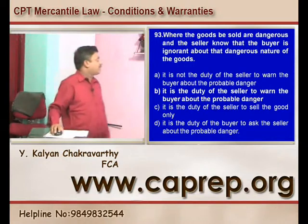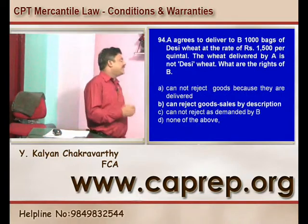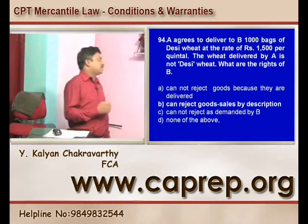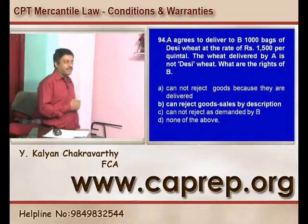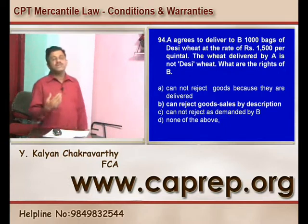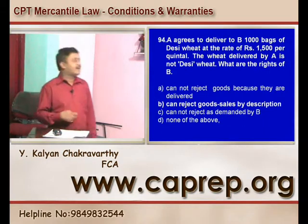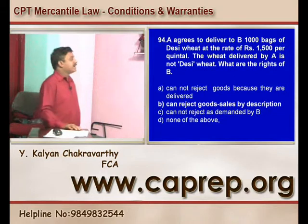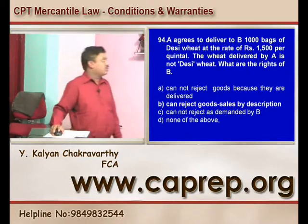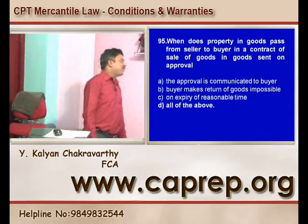Question 94: A agrees to deliver to B 1000 bags of desi wheat at a rate of rupees 1500 per quintal. The wheat delivered by A is not desi wheat. B can very well reject the goods by description — when goods are asked for with a particular description and goods of that description are not supplied, the buyer can reject them. B is the right answer.